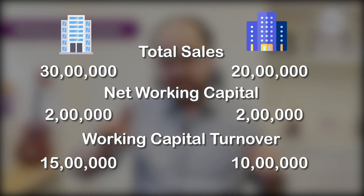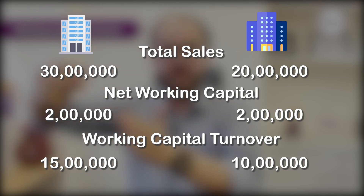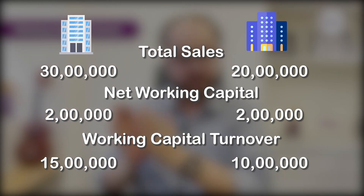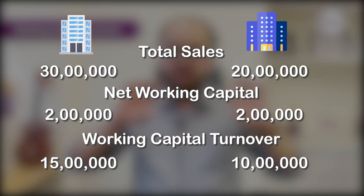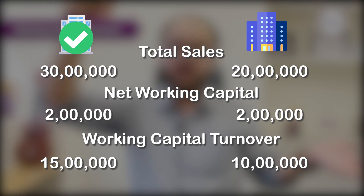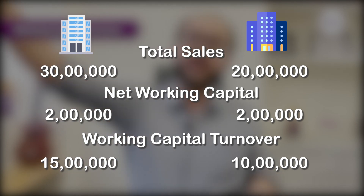In Company Two, with a net working capital of 2 lakh, by churning and moving that capital through the year, they were able to generate 30 lakh worth of sales. Company One with the same 2 lakh working capital generated only 20 lakh in sales. Clearly, Company Two has used its resources more efficiently. The finance manager, production manager, and treasury department in Company Two are doing a better job — with the same resource they generate a higher sale.